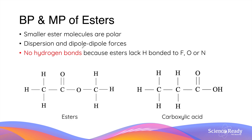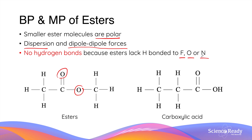Let's talk about the properties of esters, starting with boiling points and melting points. A compound's boiling point and melting point are determined by its intermolecular forces. Small ester molecules are polar due to the presence of electronegative oxygen atoms that create dipole moments, allowing them to form both dispersion forces and dipole-dipole forces. However, larger ester molecules have decreased polarity, so they have weaker dipole-dipole forces. In addition, ester molecules cannot form hydrogen bonds, as they lack hydrogen atoms bonded to fluorine, oxygen, or nitrogen. In contrast, carboxylic acids contain a hydrogen atom bonded to an oxygen, so carboxylic acids can form hydrogen bonds whereas esters cannot.